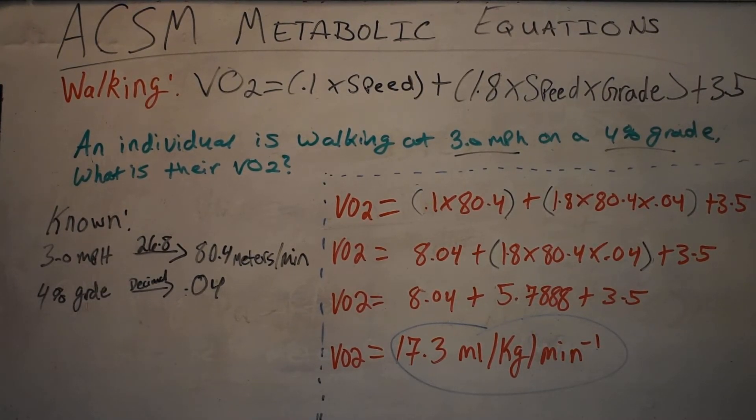For example, if they give you somebody's weight in kilograms, they're going to assume that you know to multiply that by 2.2 to get pounds, so on and so forth. They're on a 4% grade.